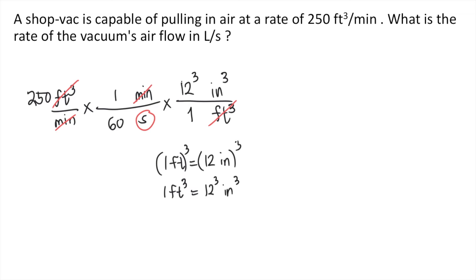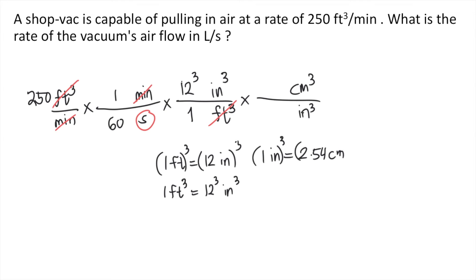Next, we convert cubic inches into cubic centimeters. We know that 1 inch is equivalent to 2.54 centimeters. We take the cube of both sides: on the left side we have 1 cubic inch, and on the right side we have 2.54 raised to the 3rd cubic centimeters. So 1 cubic inch is equivalent to 2.54³ cubic centimeters. The cubic inches cancel and now we have cubic centimeters on top.